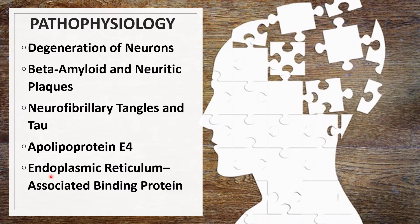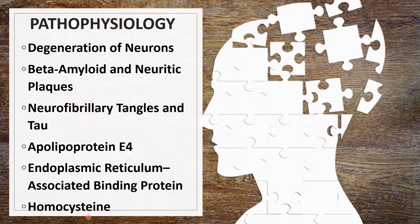Next would be the endoplasmic reticulum-associated binding protein, or ERAB. ERAB is present in high concentration in the brains of patients with Alzheimer's disease, and this high concentration of ERAB enhances the neurotoxic effects of beta-amyloid. And lastly, homocysteine — homocysteine levels are elevated in patients with Alzheimer's disease, and elevated plasma levels are associated with increased risk for the disease.